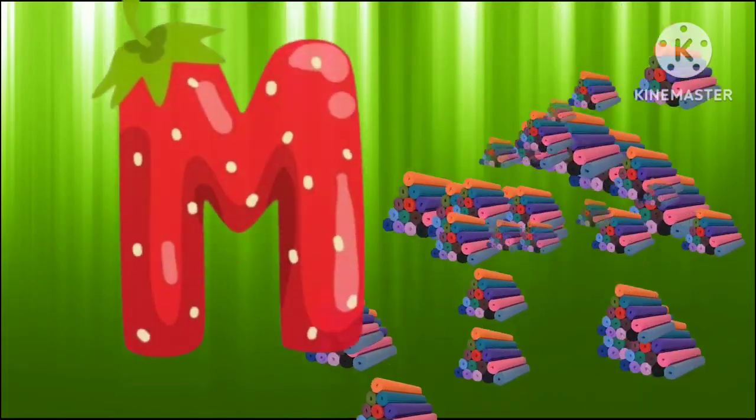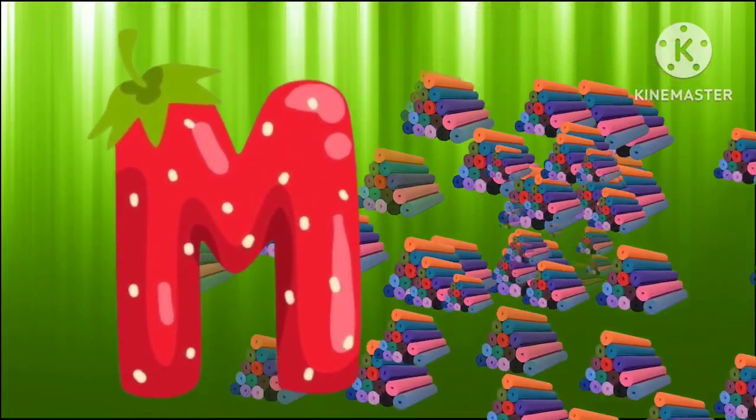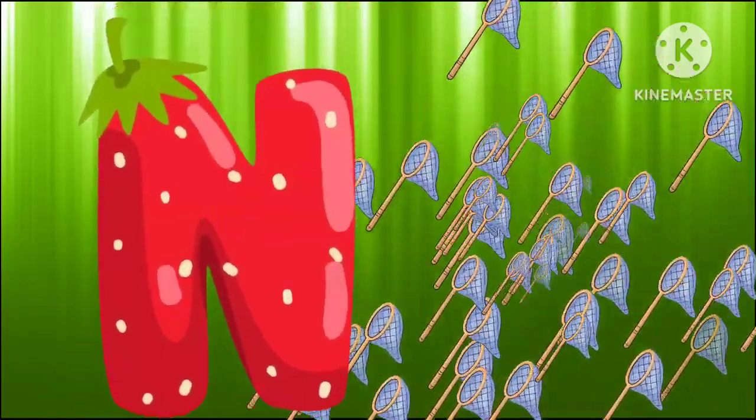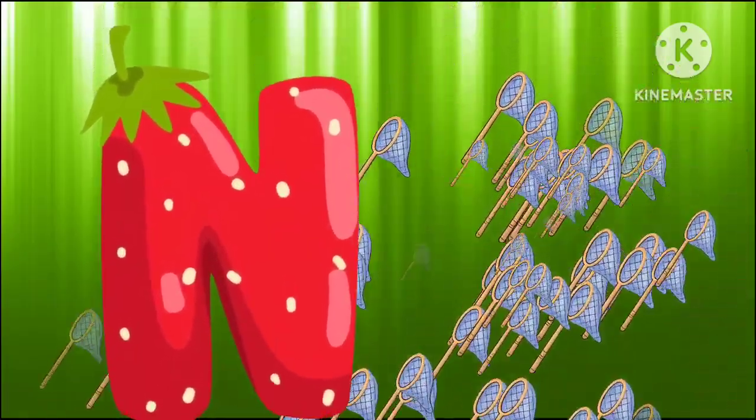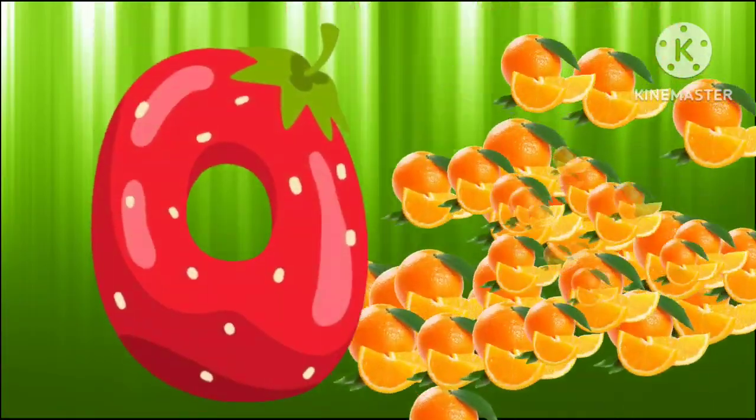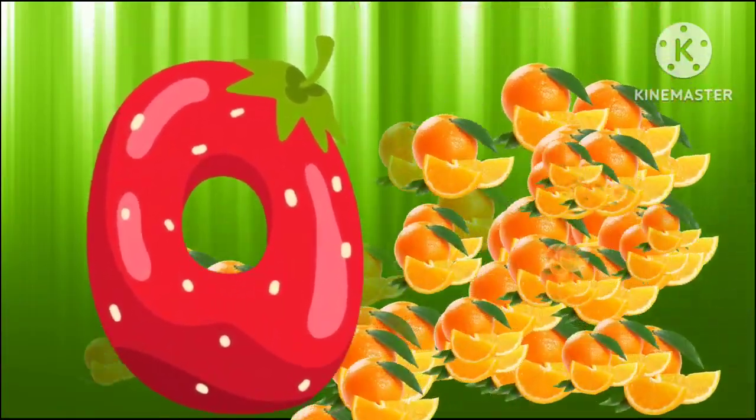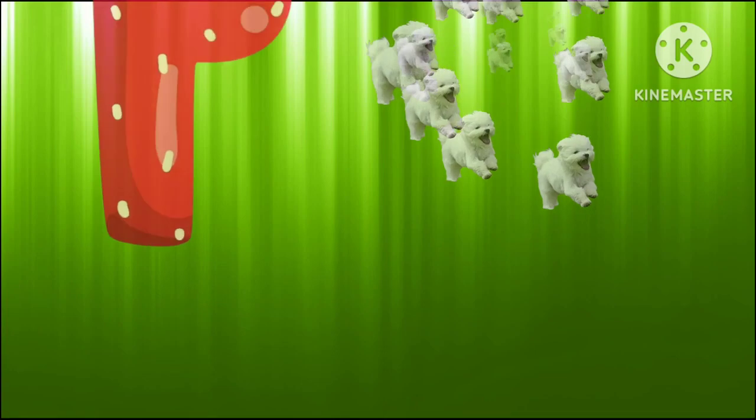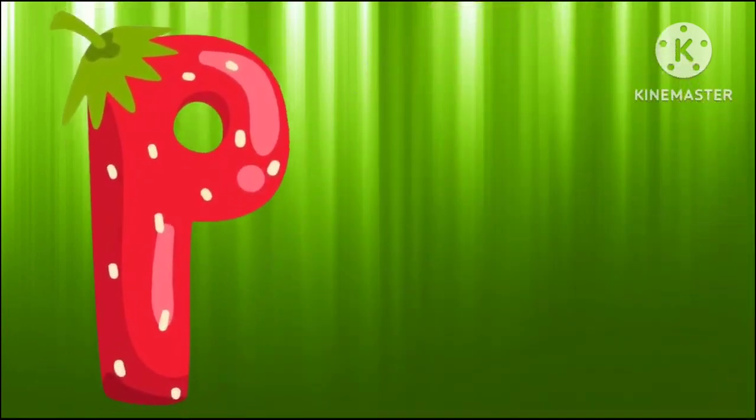M is for mat, m-m-mat. N is for net, n-n-net. O is for orange, o-o-orange. P is for pet, p-p-pet.